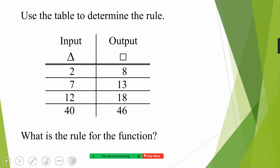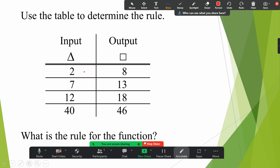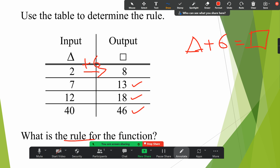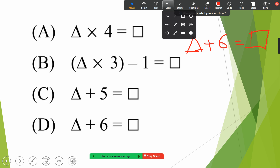Next question: use the table to determine the rule. Input is triangle and output is square. What is the rule for the function? We need to observe: what will we do with 2 to make it 8? We add 6. Let's check — 7 plus 6 is 13, 12 plus 6 is 18, 40 plus 6 is 46. So the rule for the function is: triangle plus 6 equals square.